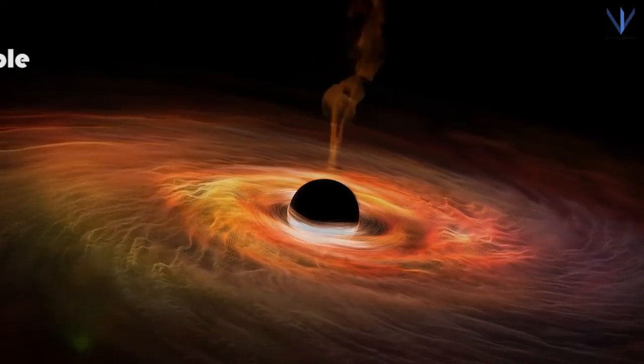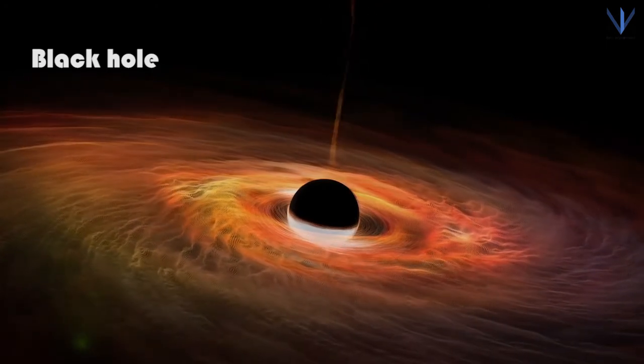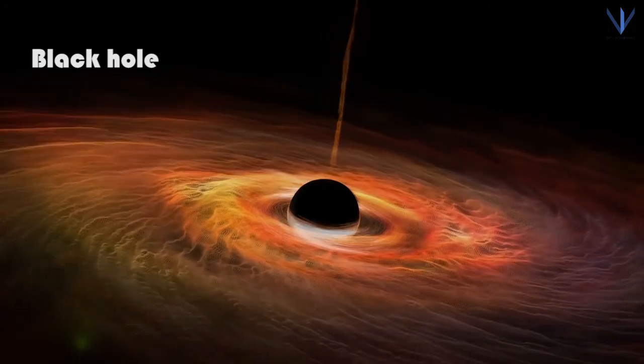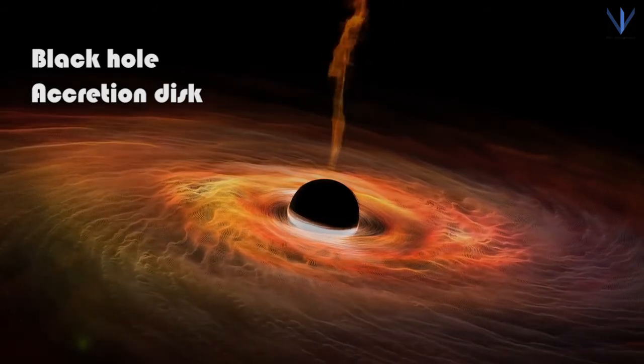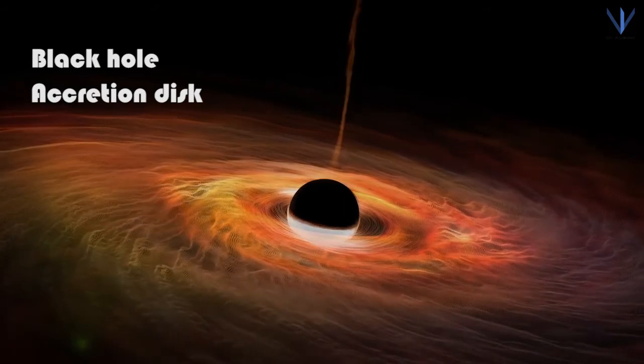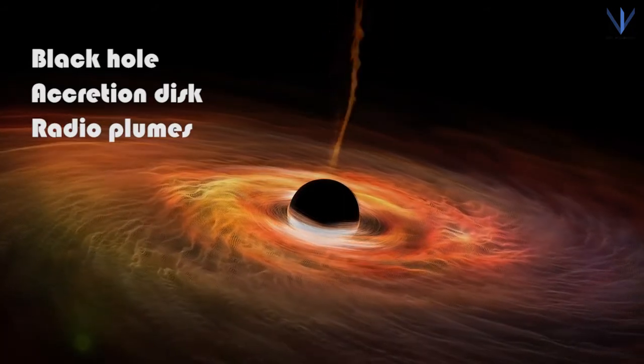Quasars have a supermassive black hole at the center, which is millions to billions times the mass of our sun. It is surrounded by a whirlpool of superheated plasma about the size of a solar system and shines brighter than an entire galaxy. Sometimes they have jets of near-light-speed particles, filling the surrounding universe with giant radio plumes.